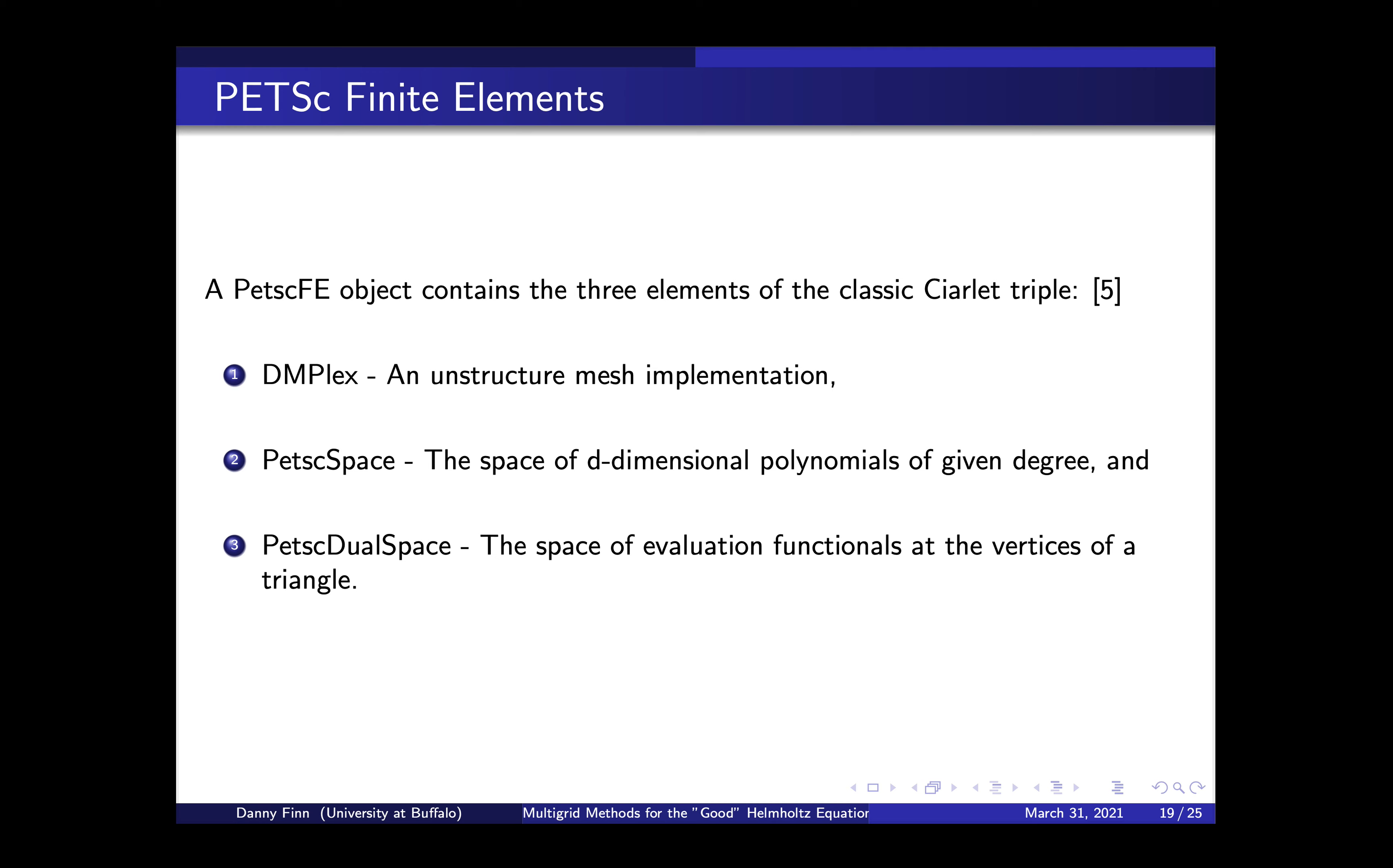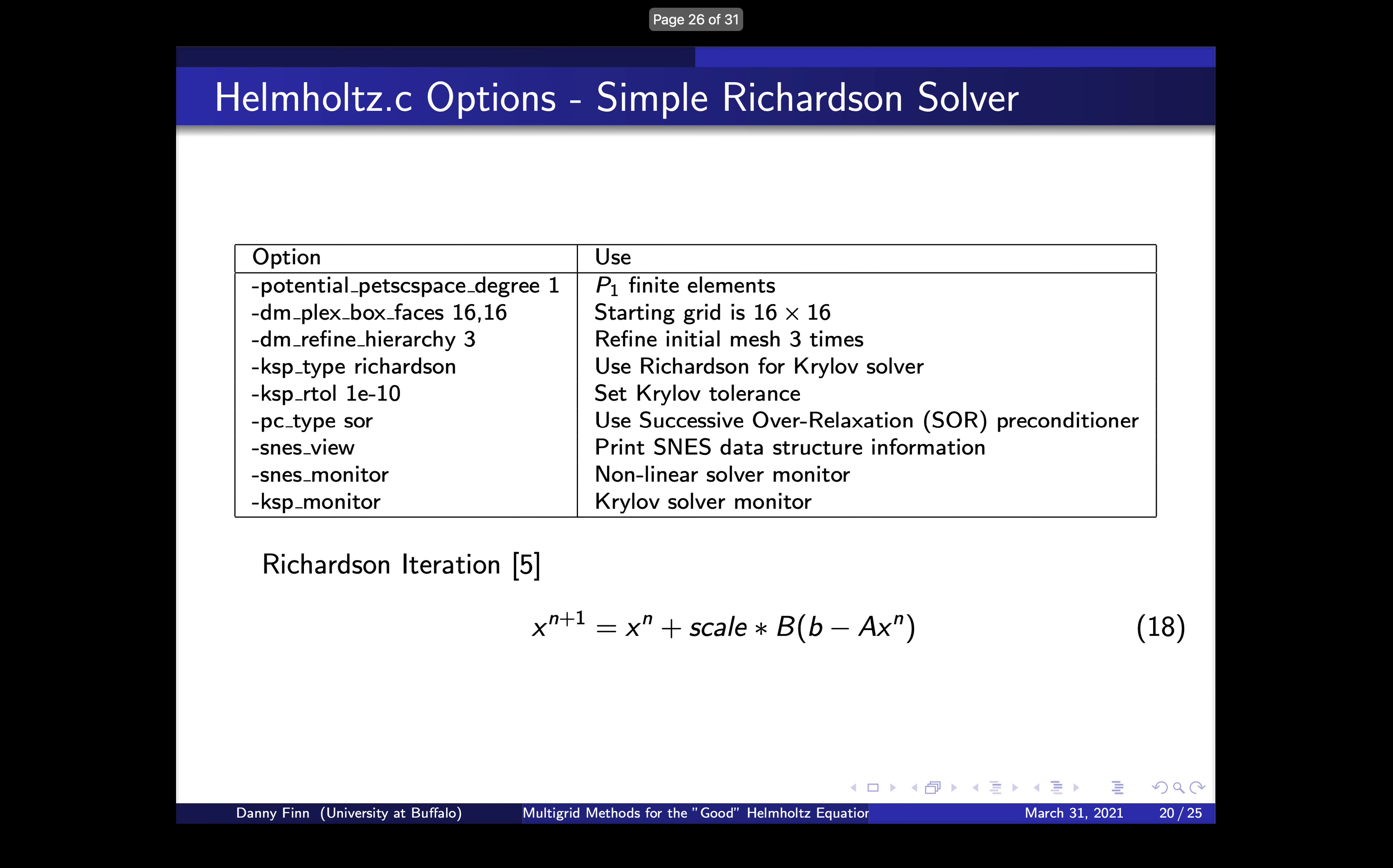And so that's where you evaluate your linear polynomials is at the vertices. So in PETSc, that Ciarlet triple is defined by these three functions. So DMPlex is an object that contains the whole structure of your mesh. It's a big structure that contains all the elements of mesh and it's an unstructured mesh. Unstructured mesh means it's not just copies of the same cell everywhere. You can have different shapes or different size cells in your mesh. And it's not necessarily just organized as simple triangles cutting apart your domain, it can be sort of organized more randomly. Your PETSc space is your space of D dimensional polynomials. So like I said, this could be your linear polynomials or second degree polynomials. And then your dual space is where your evaluation function is where you're going to be evaluating like at the vertices of your mesh triangle.